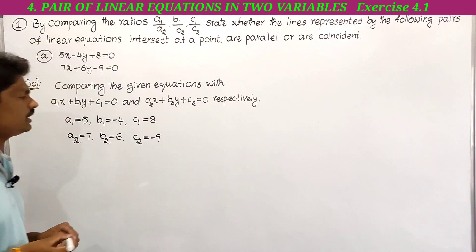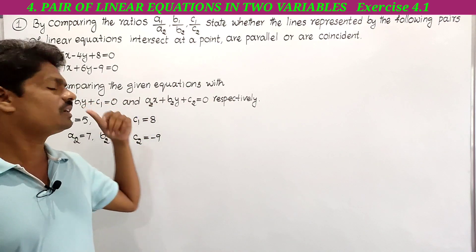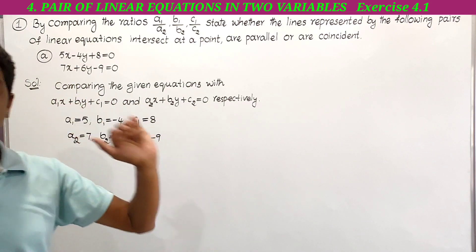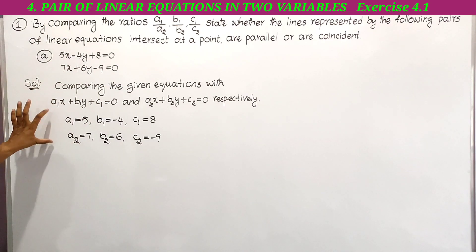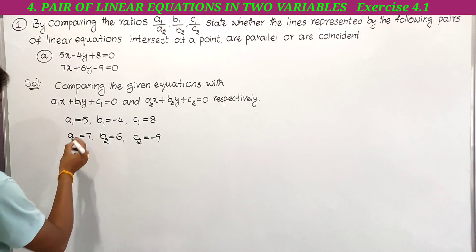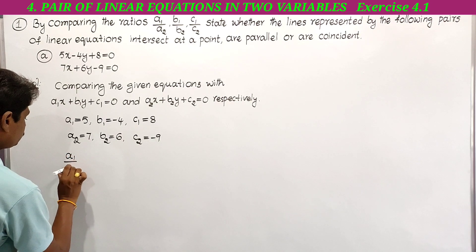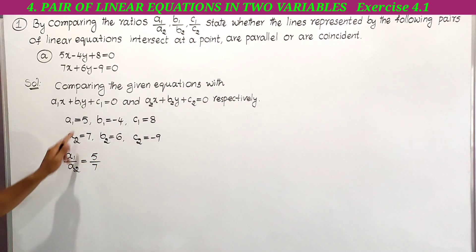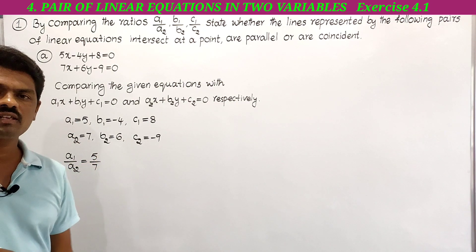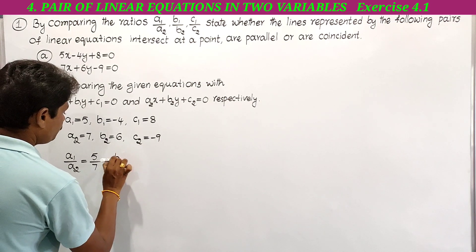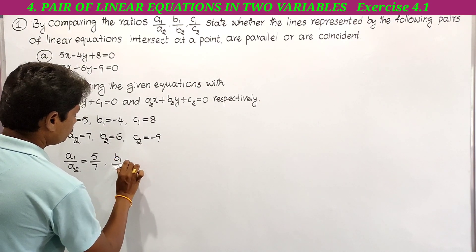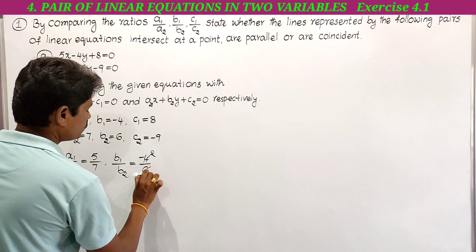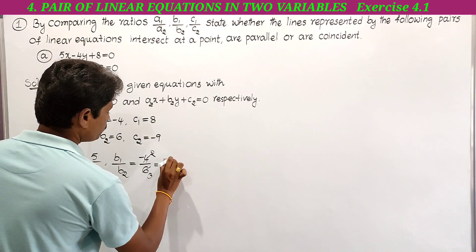So I have written the values by comparing the given equations with a1x plus b1y plus c1 equal to 0 and a2x plus b2y plus c2 equal to 0. Now we have to write a1 by a2, b1 by b2, and c1 by c2. Here a1 by a2 is equal to 5 by 7. Next, b1 by b2: b1 is minus 4 and b2 is 6, so it becomes minus 2 by 3 after simplification.